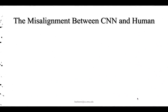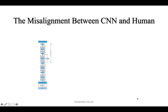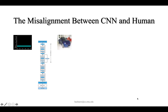We start by introducing an observation that leads to the misalignment between humans and models. Consider a ResNet-18 architecture trained on CIFAR-10 images. We grab an image of a car, feed it into the model, and get the prediction confidence shown in this figure.